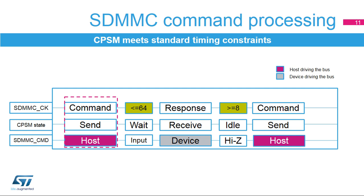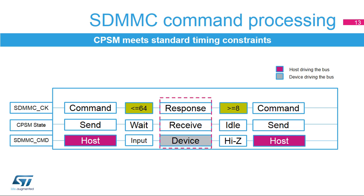Once the SDMMC ARG and SDMMC CMD registers are programmed with CMD index, WAIT RESP equals 0, 1, or 11, and CPSMEN equals 1, the CPSM moves from IDLE to SEND state and the host starts driving the SDMMC CMD line to send the command to the card. If the CPSM is programmed to wait for a response, it enters WAIT state and the command timer starts running. If the card doesn't respond within the maximum NCR time, the timeout flag is set and the CPSM returns to IDLE state. Once a start bit is driven by a device, it is detected on the command line and the CPSM moves to RECEIVE state. When the response is fully received, the received CRC code and the internally generated checksum code are compared and the appropriate status flags are set in the SDMMC interface status register.